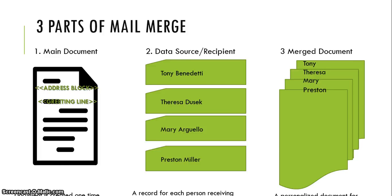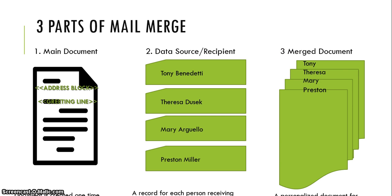It starts with the main document, and this document is created one time. Then you have the data source, or the recipient list, and this consists of a record for each person receiving their document. Here we have four individuals who will be receiving the document. The third part of Mail Merge is dealing with the merge document, which is a personalized document for each recipient.